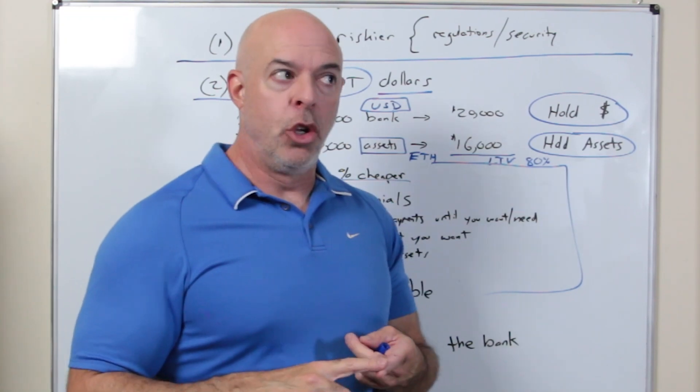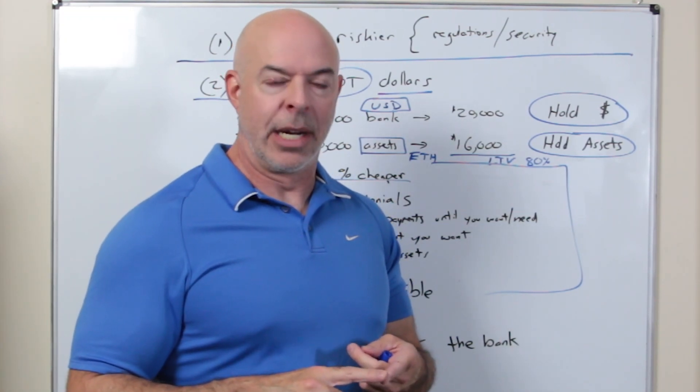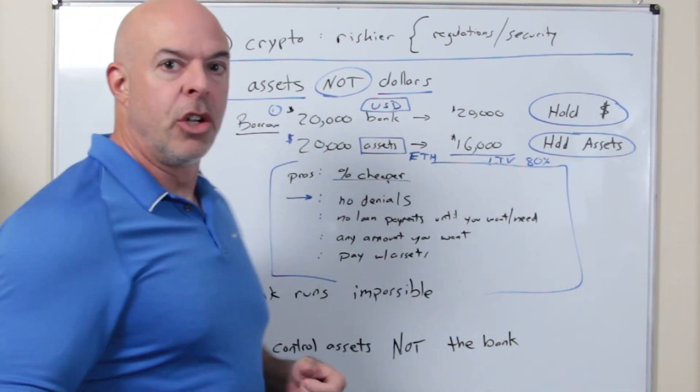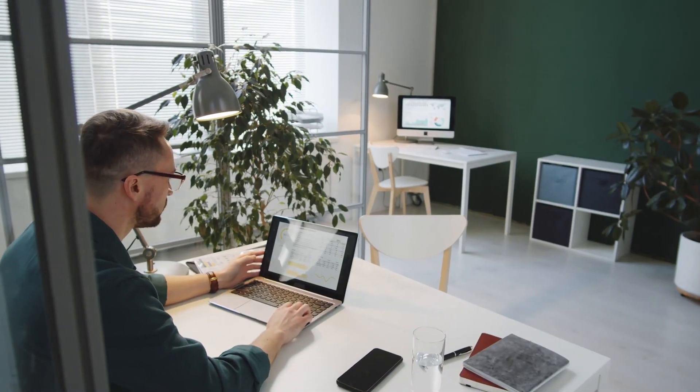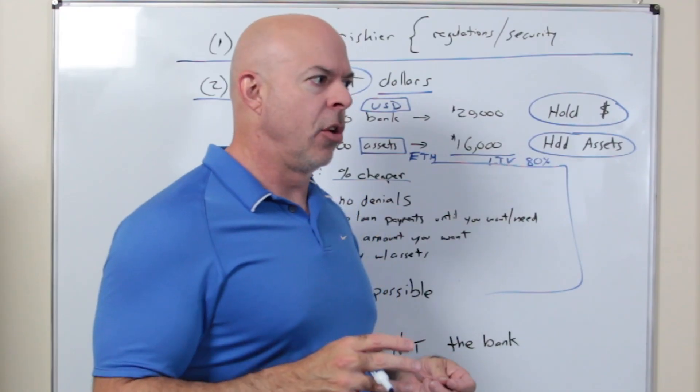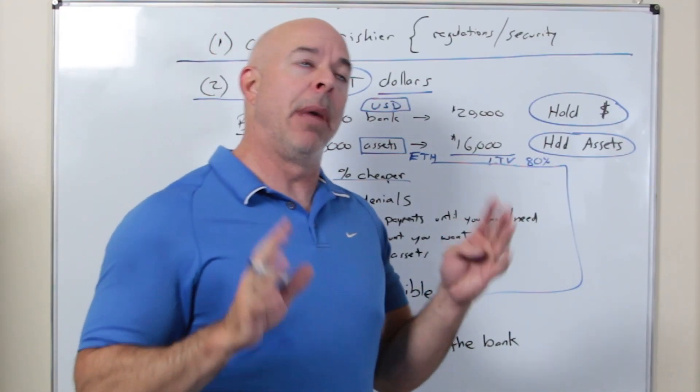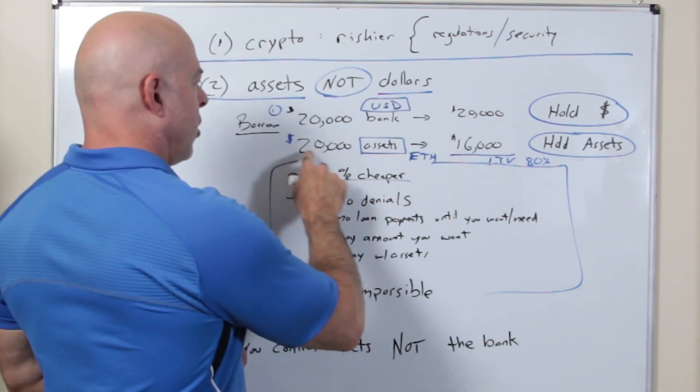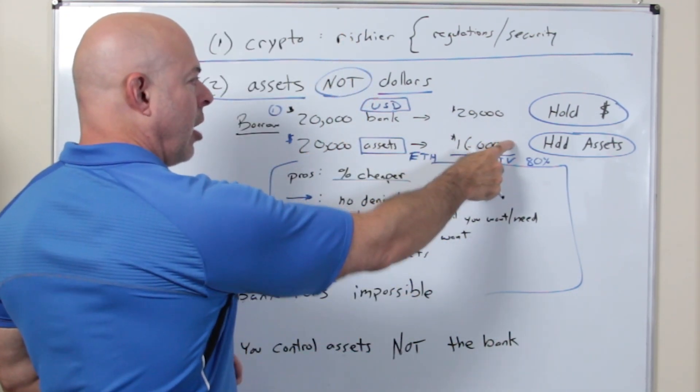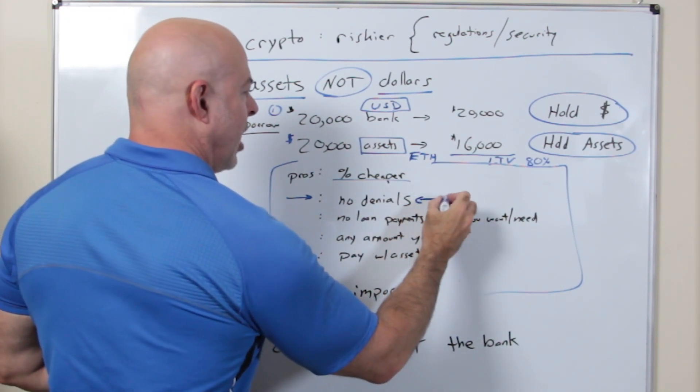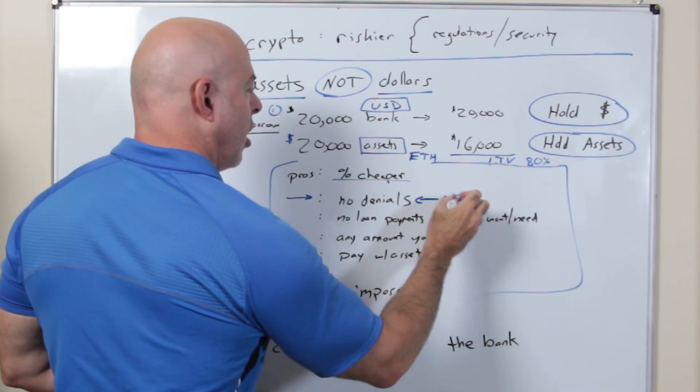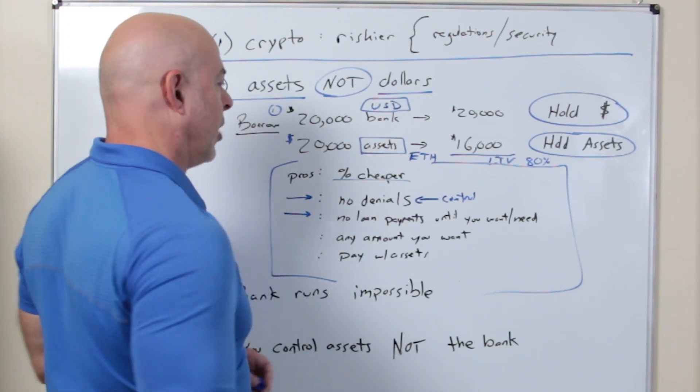Here's what's really interesting. There's no process, meaning there's no denials. You won't get denied for the loan because it's over-collateralized. You're not calling anyone up. They're not asking for your social security number, where you work, what your income is. They're not asking all the invasive questions and telling you, sorry, you can't have it. You put the collateral up, you get the loan instantly. No denials. The control is in your hands. You want the loan? You get it.